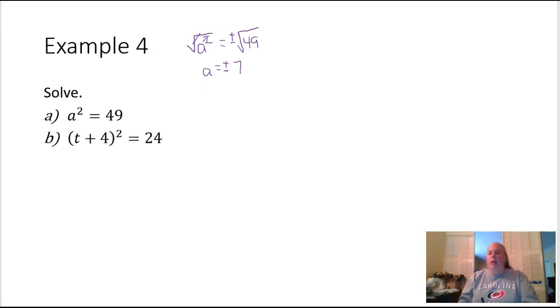What a lot of people would want to do is go ahead and expand this side over here and have T plus four times T plus four, and then foil it out and have it equal to zero and solve it. But you can actually use the square root property on this one as well.